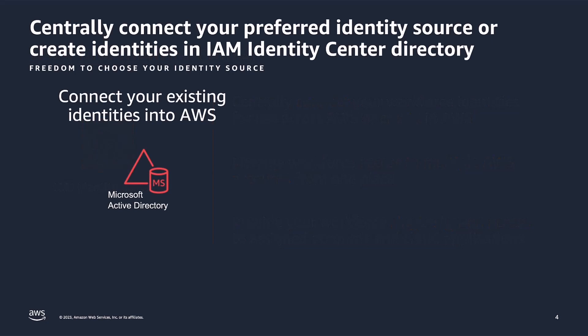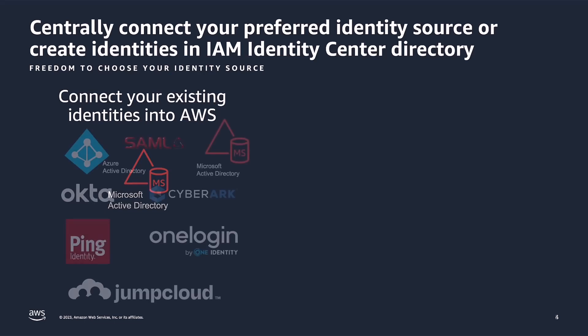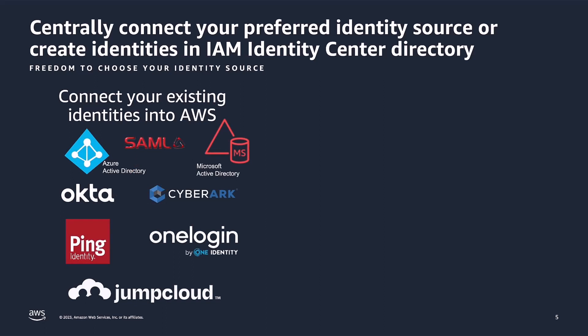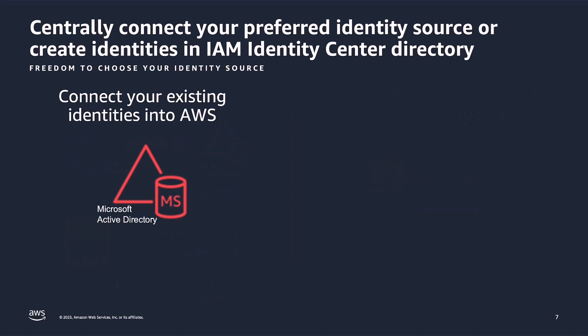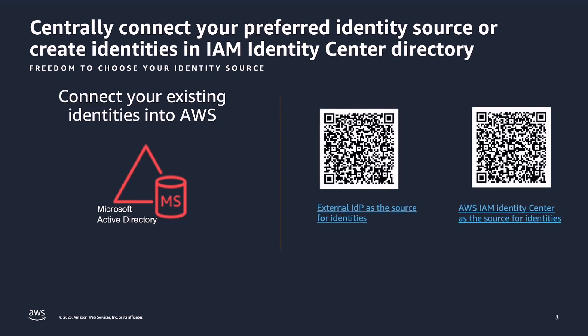Irrespective of where a customer is in their cloud journey, AWS IAM Identity Center provides customers the freedom to choose their source of identity from Microsoft Active Directory, external IDPs like Okta, Azure AD, Ping, and other SAML 2.0 providers as listed on the screen. Customers can also choose to leverage the identity store inside AWS IAM Identity Center as a source for their identities. In this video, we will focus on Active Directory as a source for identities. If you would like to learn more about using identity store or an external IDP as a source for identities, please follow the links displayed on the screen.